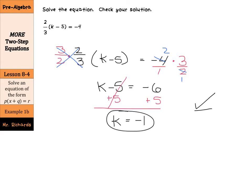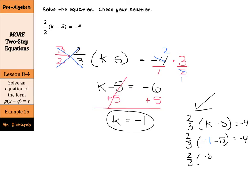When you go to check your work, 2 thirds times k minus 5 needs to equal negative 4. Make your substitution in for k: we have negative 1 minus 5. 2 thirds times negative 6 over 1 needs to equal negative 4. This is negative 12 over 3 equals negative 4, and negative 4 equals negative 4. So our solution of k equals negative 1 is correct.